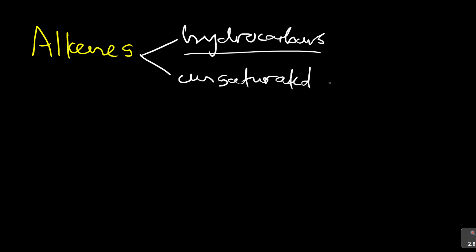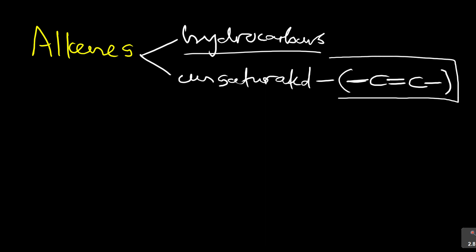Number two, we said they are unsaturated. The word unsaturated means it contains multiple bonds — either a double bond between carbon atoms. So for alkenes, this is what they contain: carbon double bond carbon. Later we are going to look at what is called functional groups. We must know this is the functional group — this is what makes alkenes behave the way they behave. They have got a double bond. Don't just say multiple bonds — you know that the multiple is a double bond. Number one, they are hydrocarbons; number two, they are unsaturated.